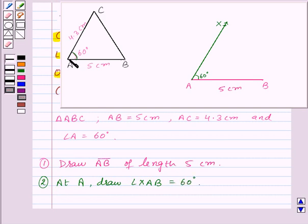Now we have AC is equal to 4.3 cm. So with A as center we will draw an arc of radius 4.3 cm to cut AX at point C like this. So this is the point C.